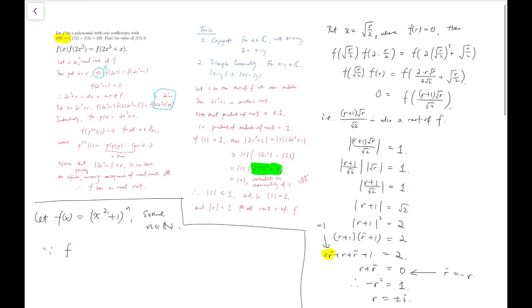And because f(2) + f(3) = 125, now this condition finally comes into play. We know that 5^n + 10^n = 125. And we can just simply do some guess and check and know that n is equal to 2.